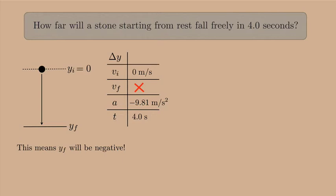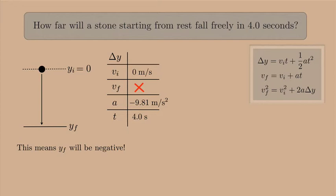So now I can look at my three kinematics equations for constant acceleration. And I want something that doesn't have v final in it. So it looks like the top equation is the one I'm going to want to use. Now it's already solved for delta y. So that's good.